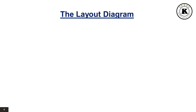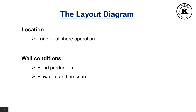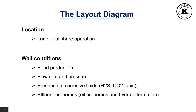The layout diagram varies according to location — land or offshore operation — and well conditions such as sand production, flow rate, and pressure; presence of corrosive fluids such as H2S, CO2, and acid; and effluent properties, including oil properties and high-grade formation.